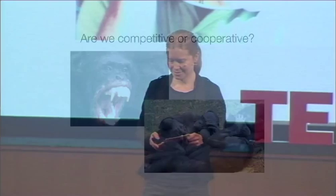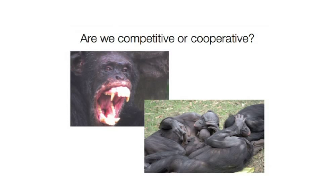Are we competitive or cooperative? Both. The angry guy is a chimpanzee; the love-in down here — they're bonobos. Both share 98% of their DNA with humans. Each species has quite a different way of dealing with conflict.